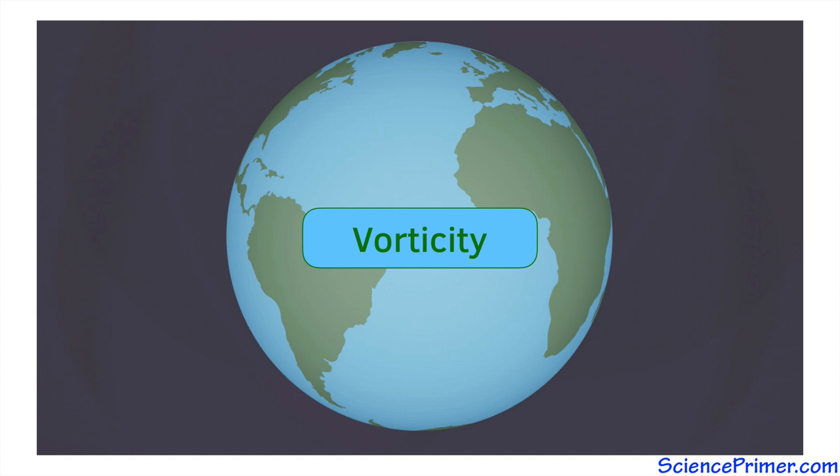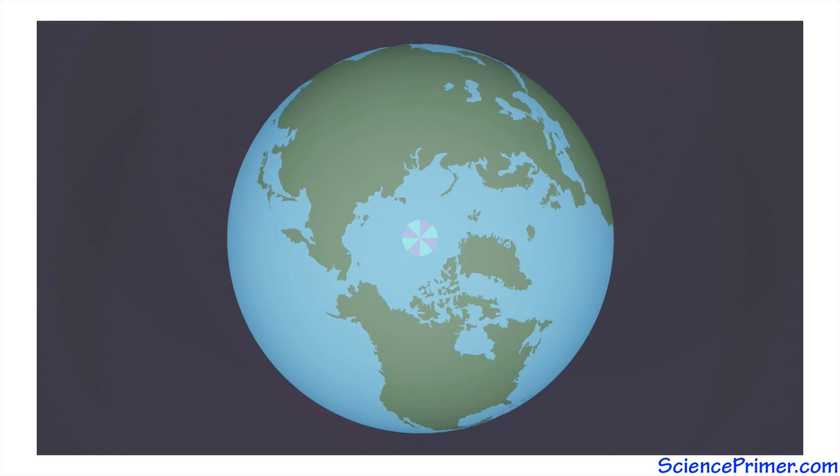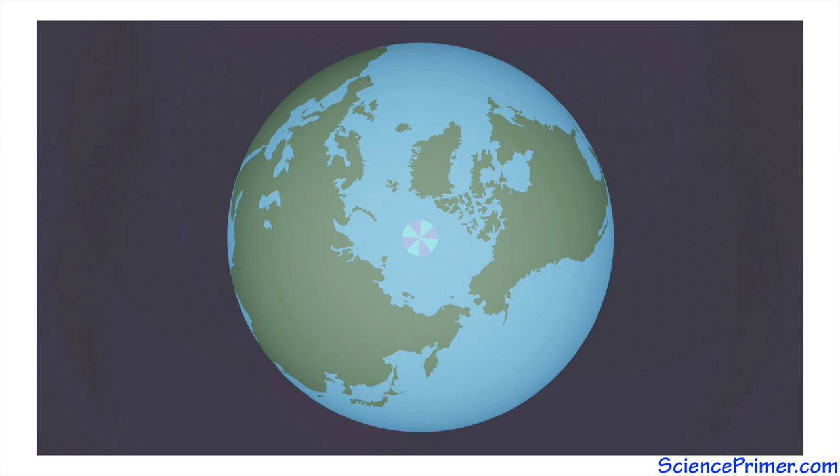The water spins because its relative vorticity is different from the planetary vorticity at that location. Similar behavior would be observed if we moved water in the opposite direction. A parcel of water magically and instantaneously moved from the equator up to the north pole would keep the lack of spin it had at the equator while the Earth would rotate under it. From the local frame of reference of the rotating Earth, the water would rotate clockwise.